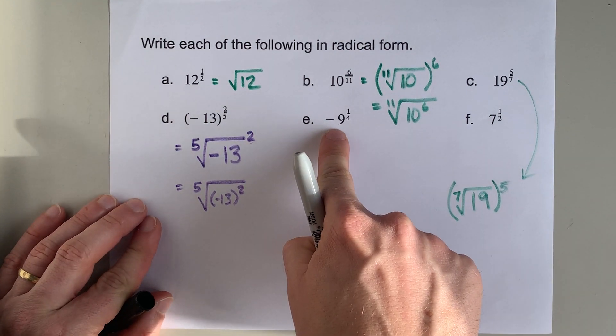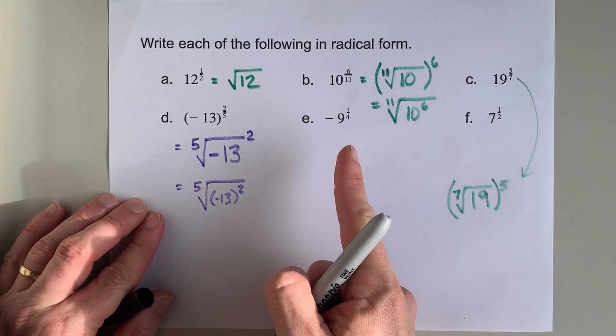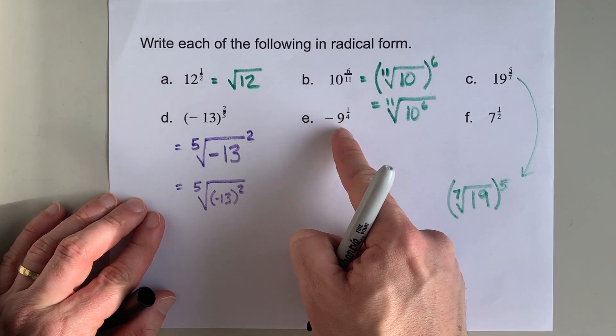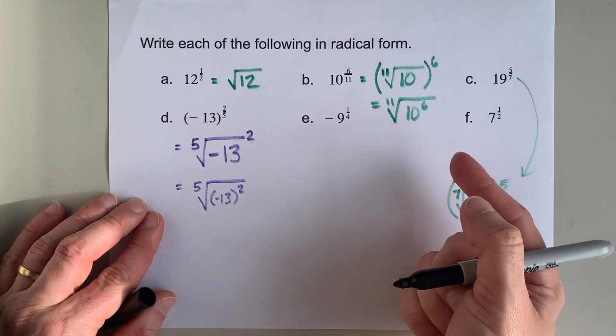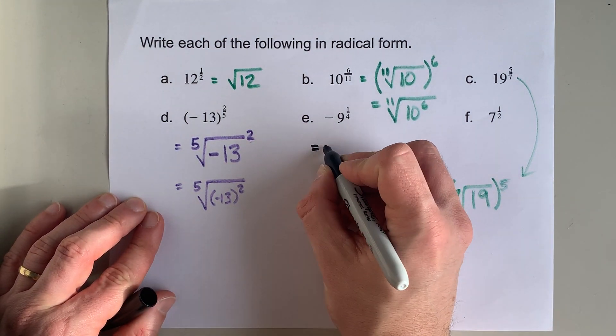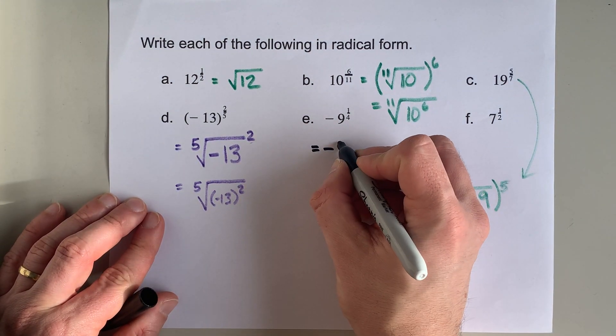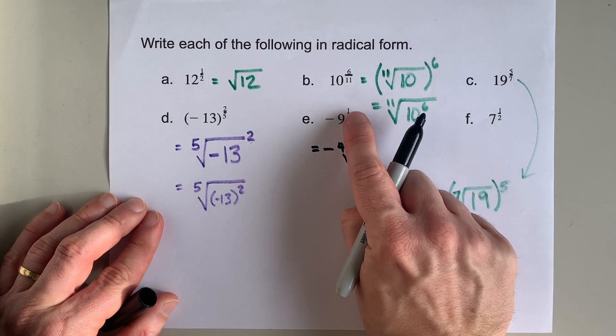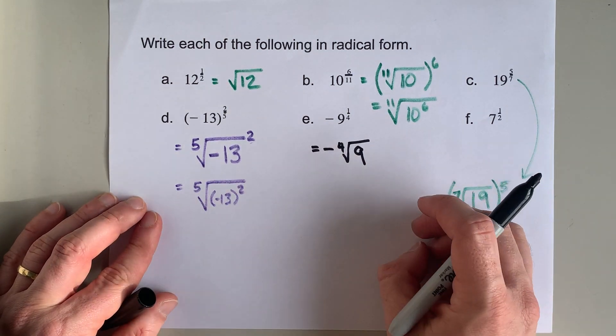Now, this negative is not grouped with the 9. By order of operations, this is 9 to the power of a quarter, and then you negativize the answer. So, you write your negative. I'm going to write my fourth root here, and I actually don't need to write a power of 1, because a power of 1 doesn't do anything.